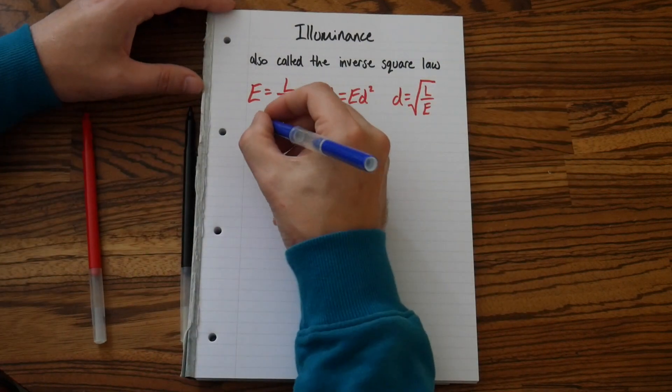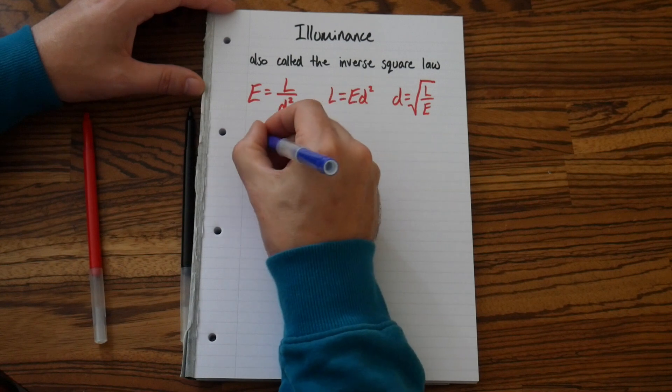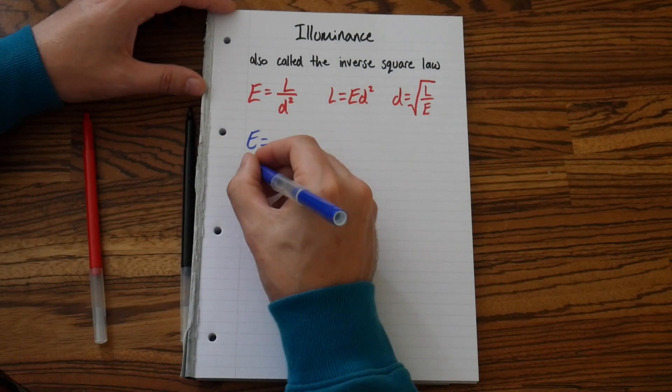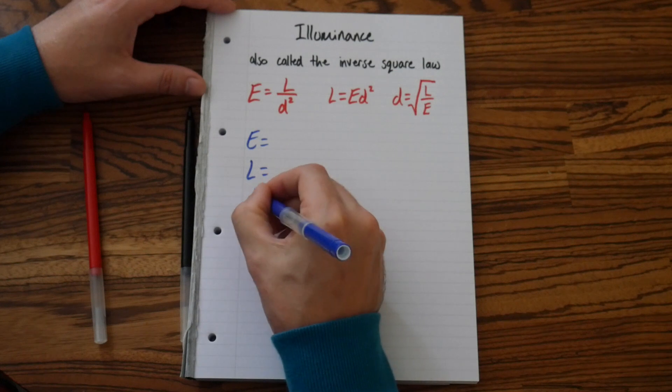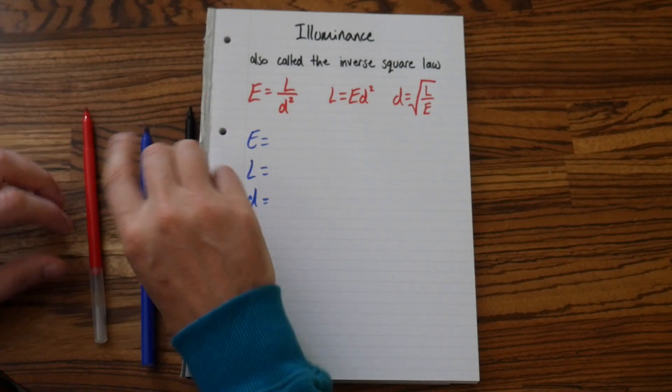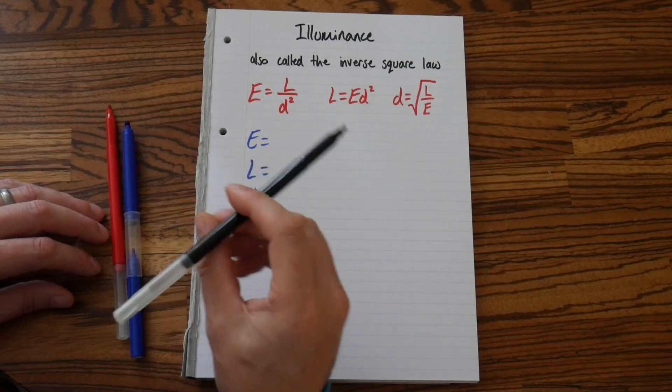So, switch pens. Let's write down what these symbols mean. So, we have E, L, and D equals. Back to my black.